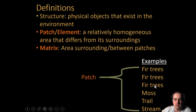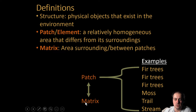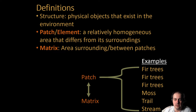Of course, if you have a patch, you have to have something that surrounds it — by definition it's a unique unit. That surrounding area is your matrix, simply defined as the area surrounding or in between patches. As you can get from that definition — and from the two-headed arrow — the patch and matrix are complementary to one another: you cannot have one without the other. Together they occupy a particular area; one takes up one part, the other takes up the rest.